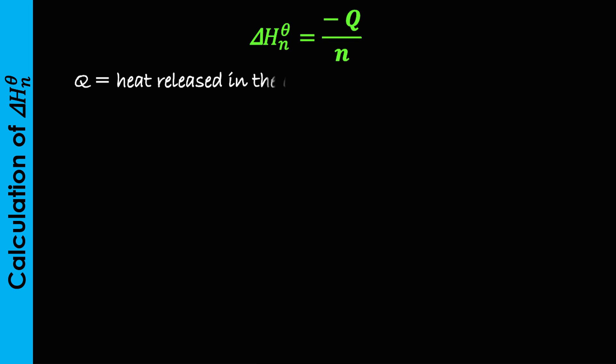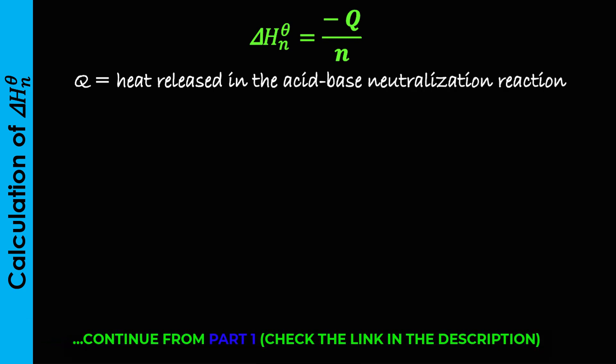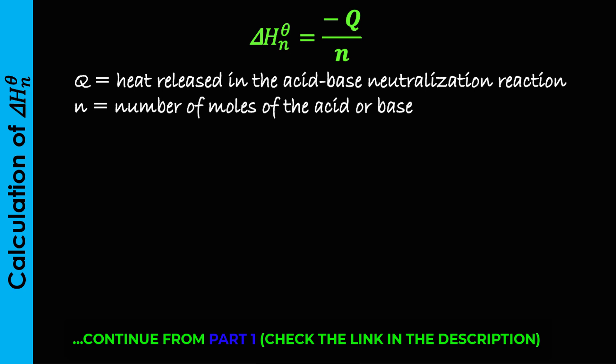To calculate the standard heat of neutralization of a reaction, we apply the formula: delta H theta equals minus Q over N, where Q is the amount of heat released in the neutralization reaction between the acid and the base. N is the number of moles of either the acid or the base, obtained by multiplying their molar concentrations and volumes in dm³. The negative sign shows its exothermic value.